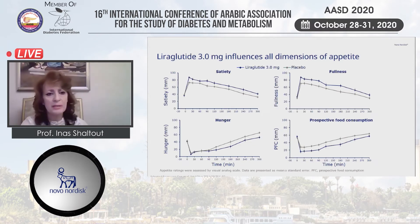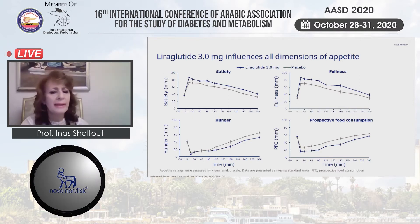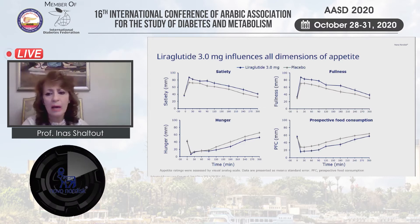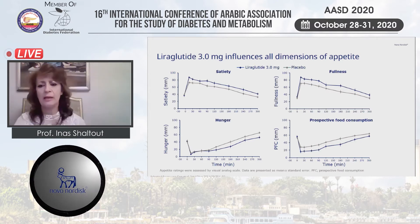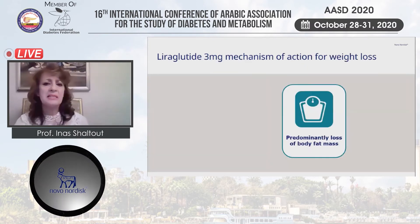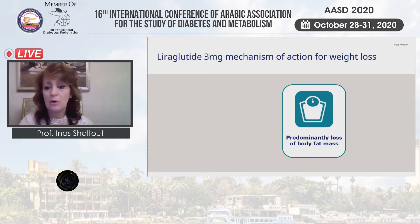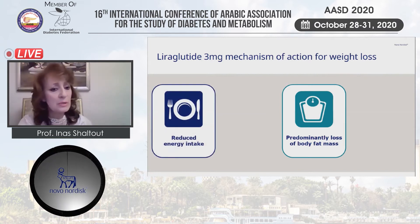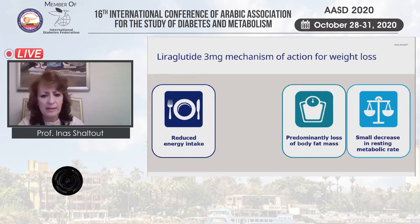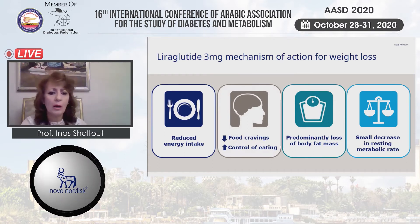The effect of exogenous liraglutide 3 mg affects all dimensions of appetite: it improves satiety, leads to sensation of fullness, reduces hunger, and there is reduction in prospective food consumption. The mechanism of action for weight loss of liraglutide includes loss of body fat mass, reduced energy intake, a small increase in resting metabolic rate, reduced food craving, and improvement of the control of eating.